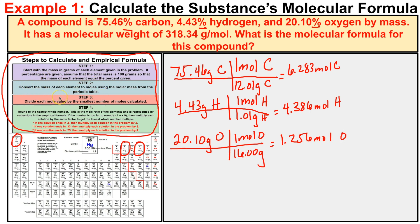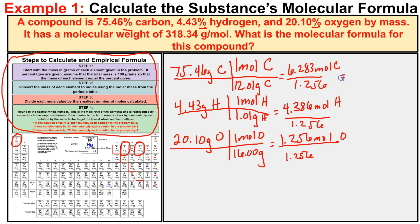In step three, we divide each mole value by the smallest amount of moles present. The smallest of these three values is 1.256, so we divide each one by 1.256. We end up with 5 for carbon, 3.5 for hydrogen, and 1 for oxygen. We cannot have subscripts with decimals, so we need to convert these to whole numbers.